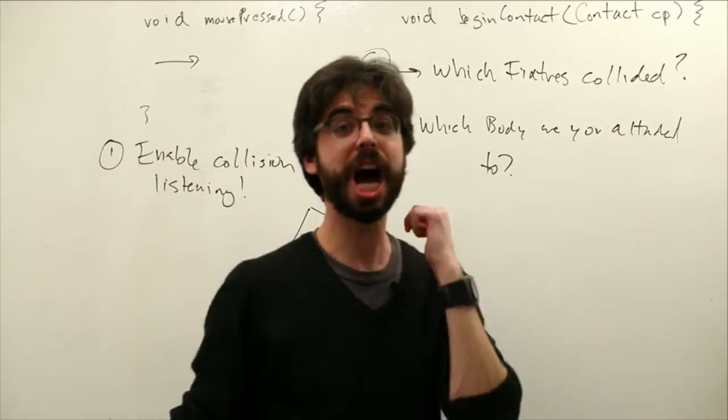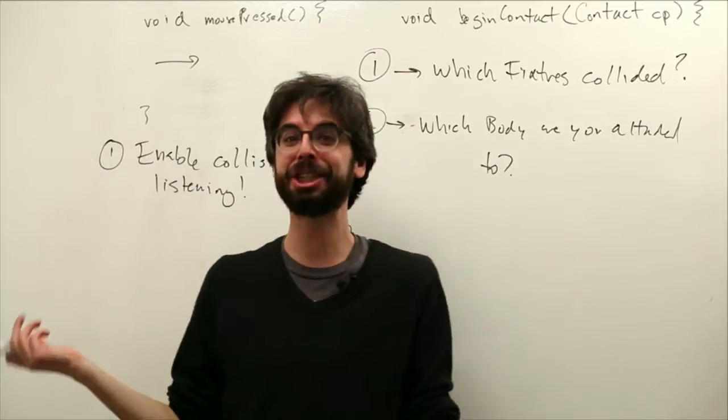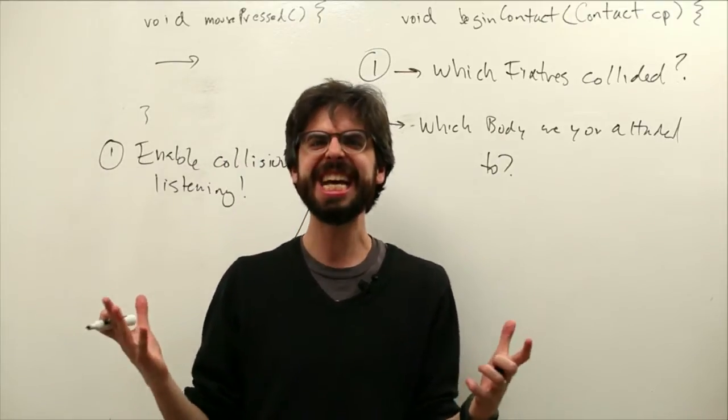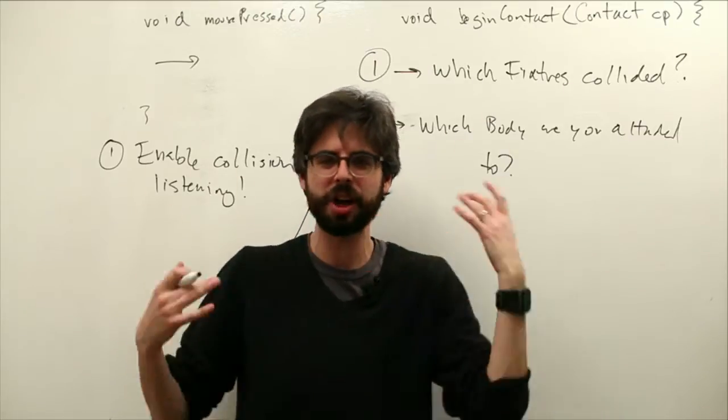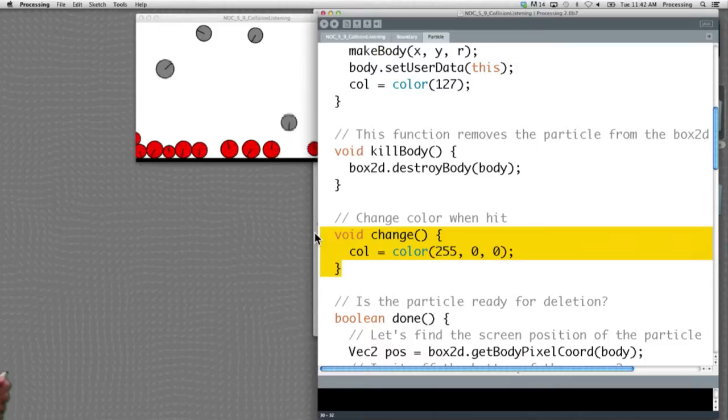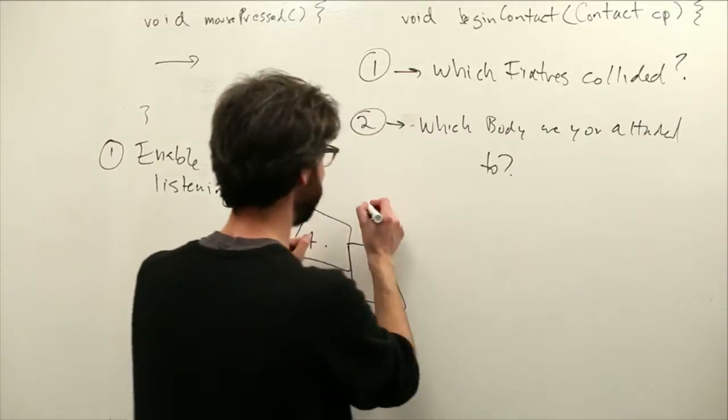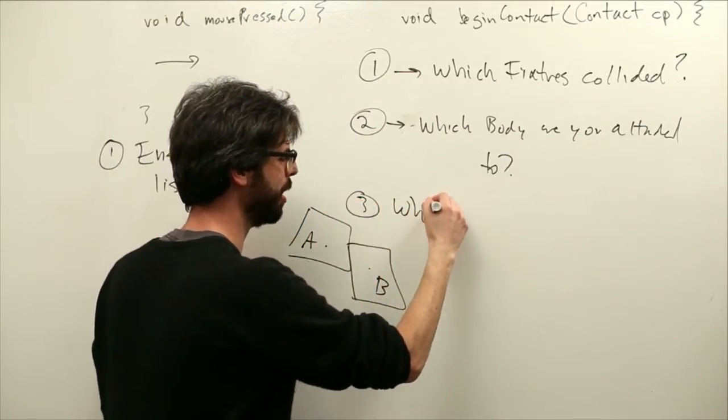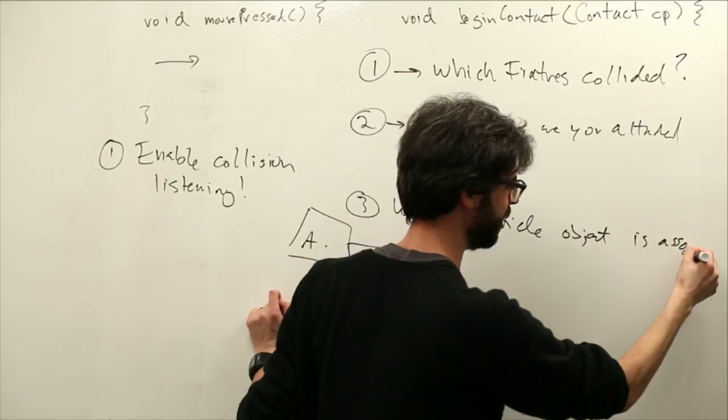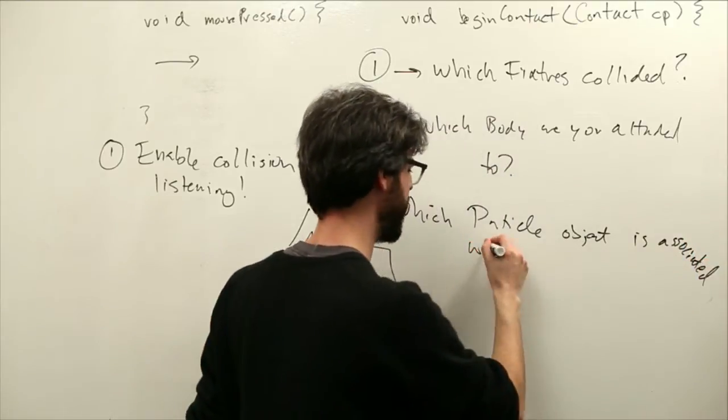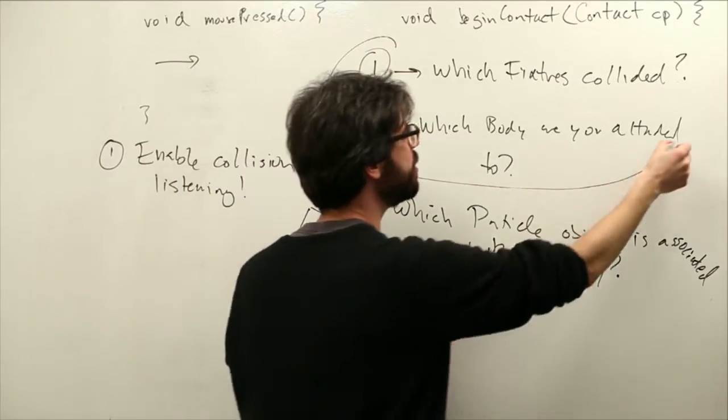So step one is the contact will tell us which fixtures have collided. The fixtures will tell us, hey, we're attached to a body. Now, the Box2D body is the physics engine, that little point that's moving around that has the location, the velocity, all that stuff. What we want, remember, is this particle object. We want to affect that particle object. So what we need to do is say, which particle, now this is our thing, object, is associated with that body. Right? So this is all given to us from Box2D.